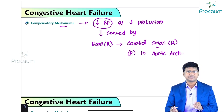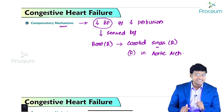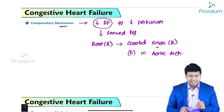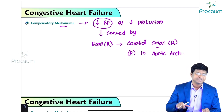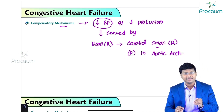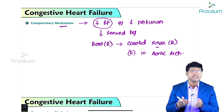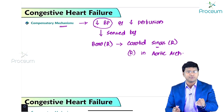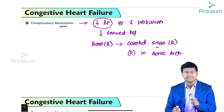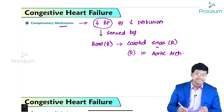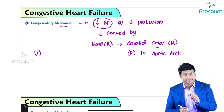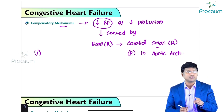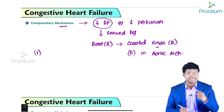Once these baroreceptors are activated, the afferent pathway gets activated. The afferents from these baroreceptors involve the ninth and tenth cranial nerves, which play an important role in passing information to the medulla oblongata, where sympathetic outflow originates.